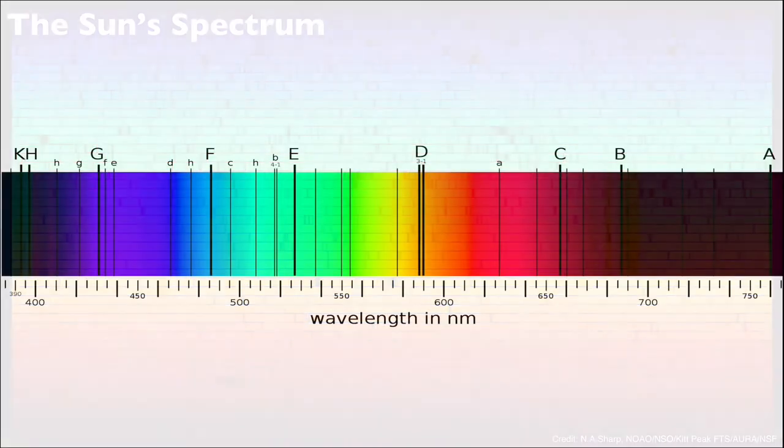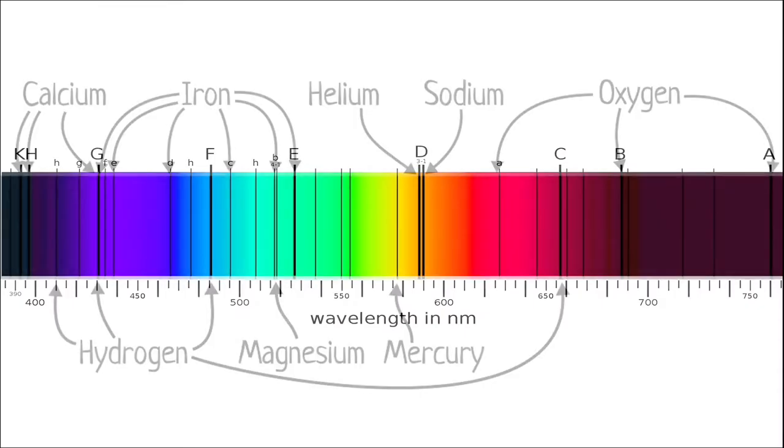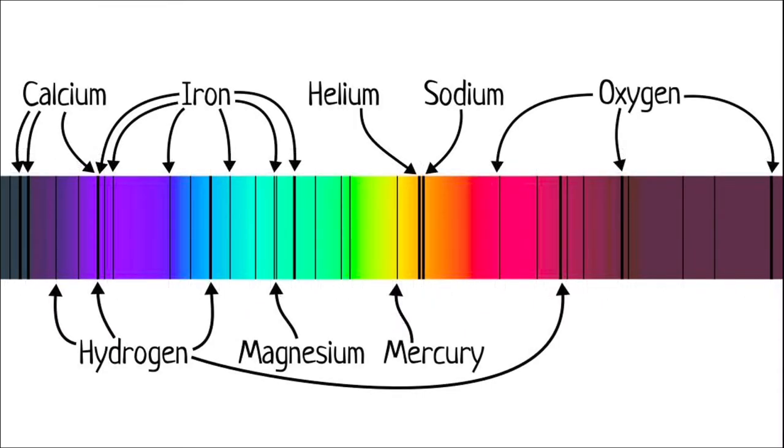If we look at a more simplified version of the sun's spectrum, showing primarily the more noticeable Fraunhofer lines from the previous spectrum, we can actually identify each line with the element that caused it.